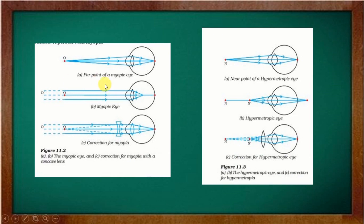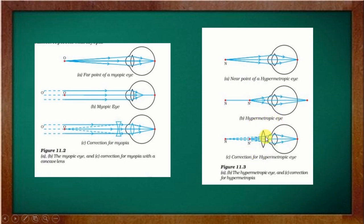Here you can see in the diagram: the far point of a myopic eye, and how a myopic eye focuses in front of the retina — so we use a concave lens for correction to bring the focus onto the proper retina position. In hypermetropia, the focus falls behind the retina, so we use a convex lens to correct it.